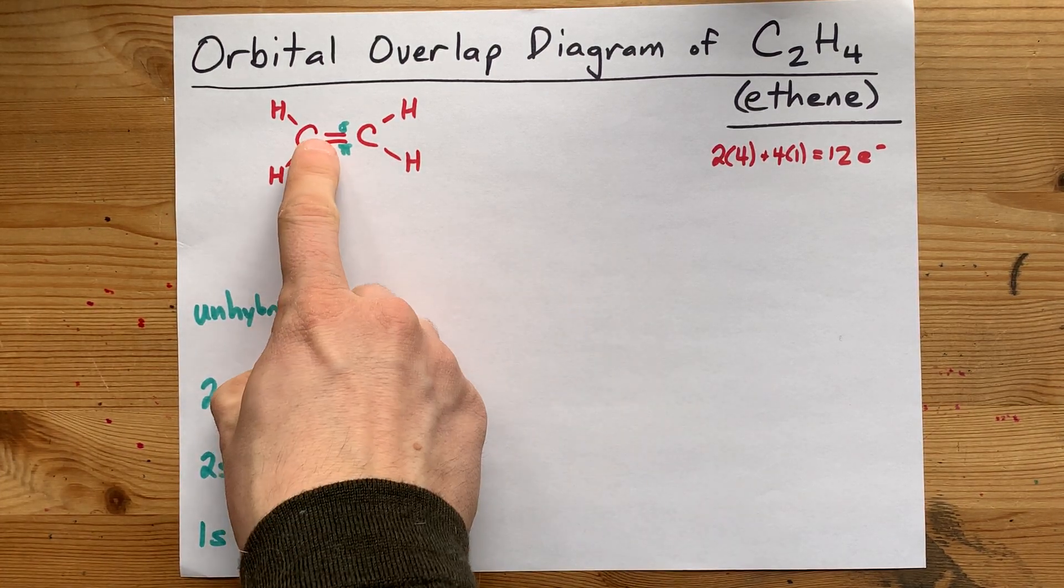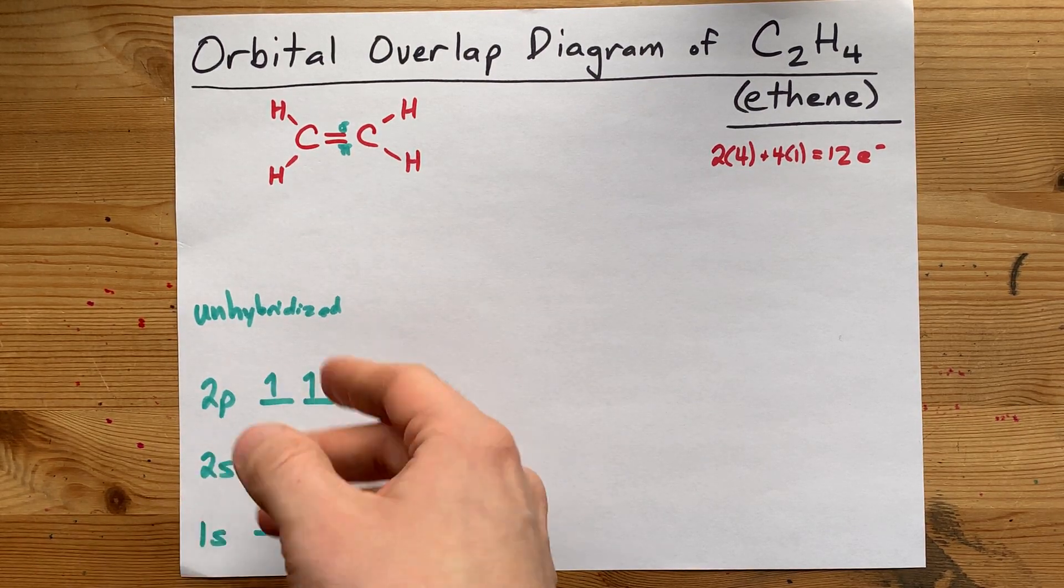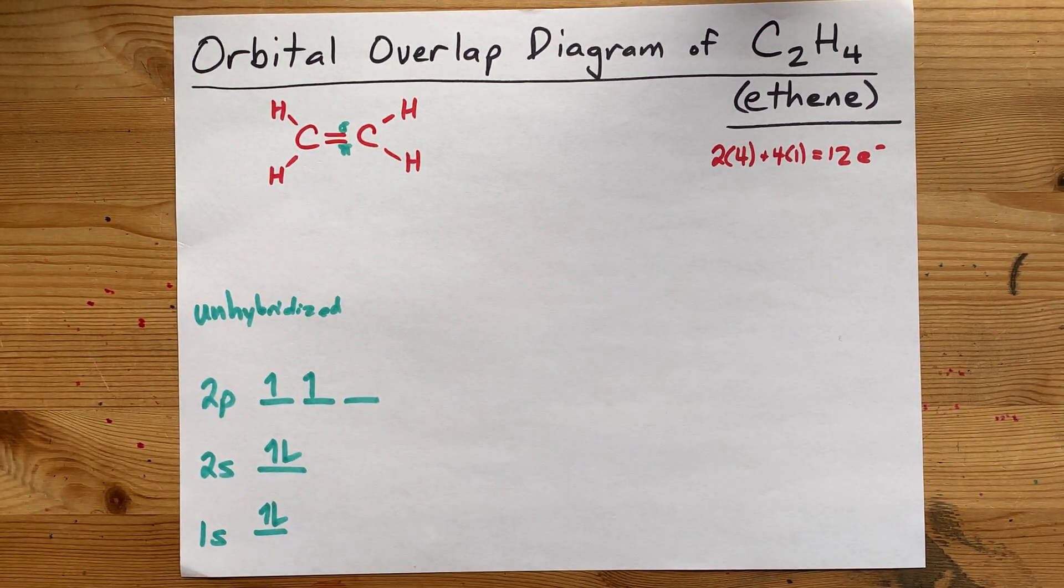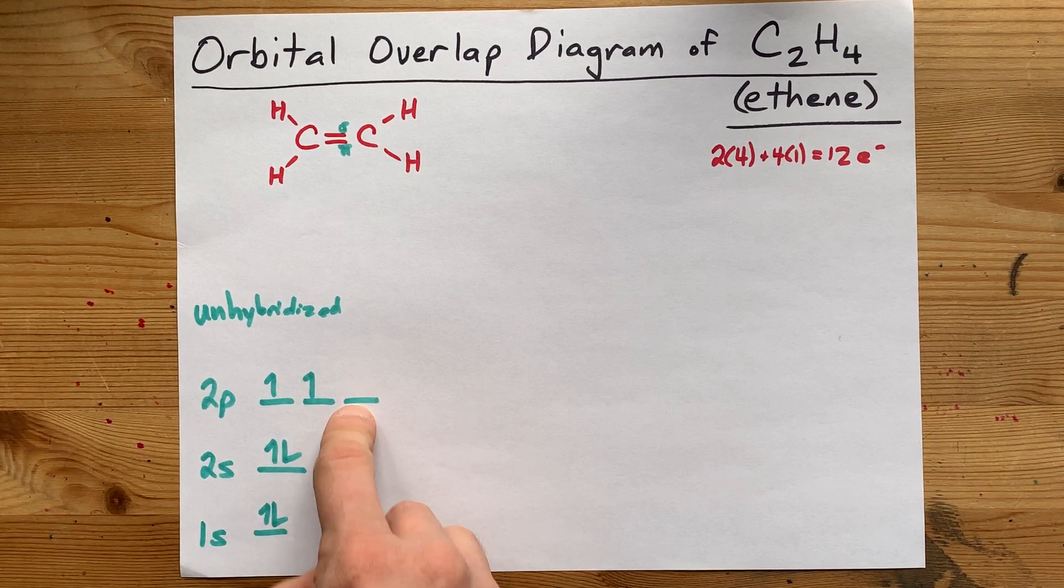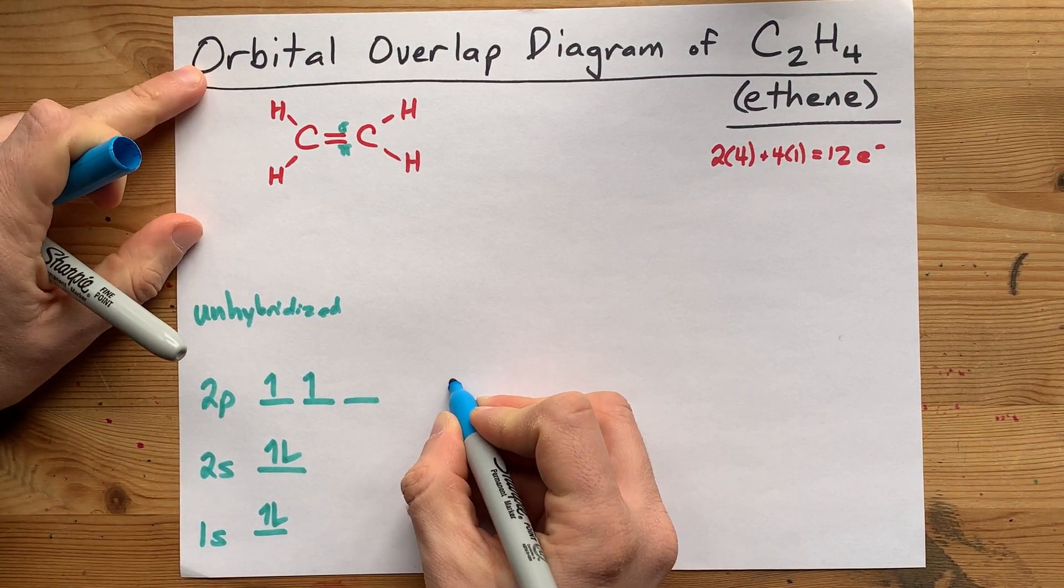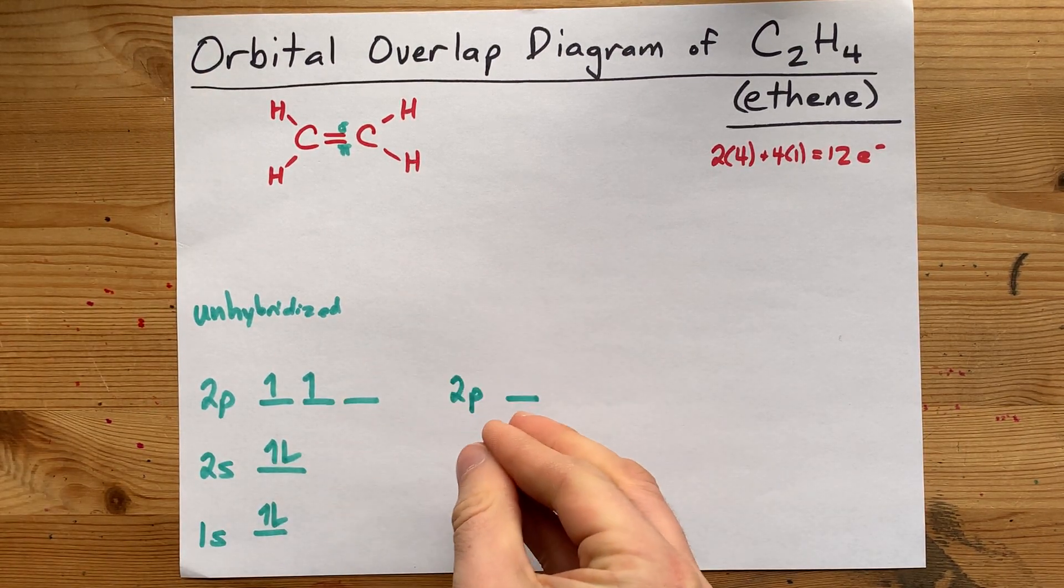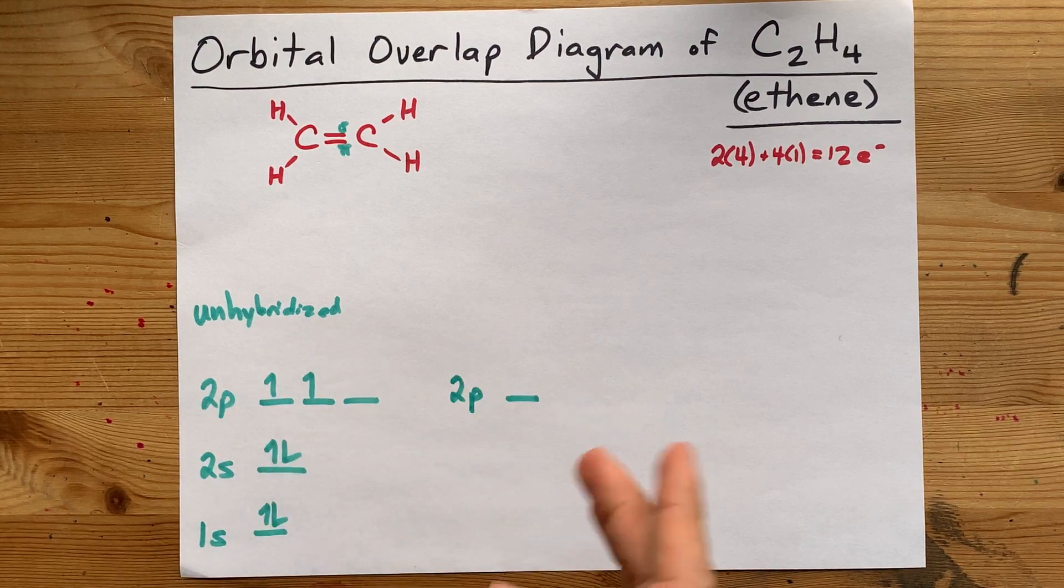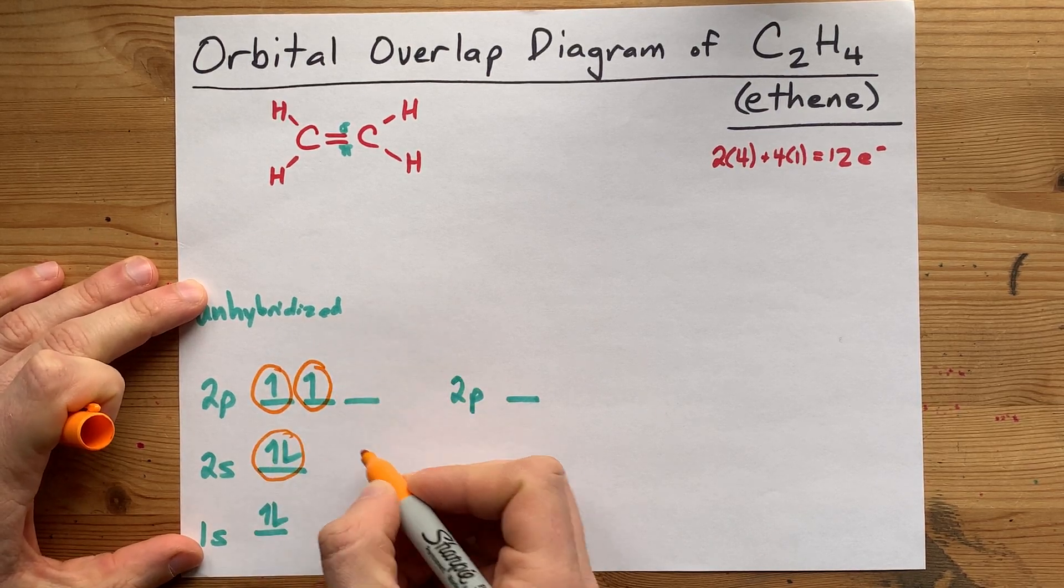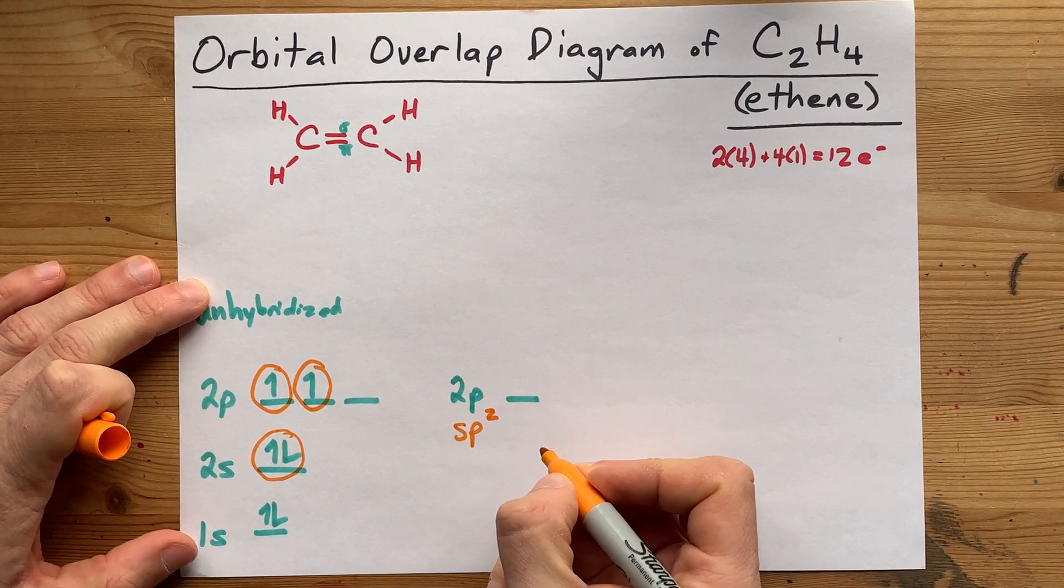We need to explain how carbon can make three sigma bonds and one pi bond. Here's how you do that. Pi bonds require unhybridized p orbitals. So, one of these, because we need one pi bond for each carbon, one pi bond requires one of the two p orbitals to be left over, and the rest of these orbitals will hybridize together. So, the 2s, one of the two p's, and another one of the two p's will combine to make what we call sp2 hybridized orbitals.